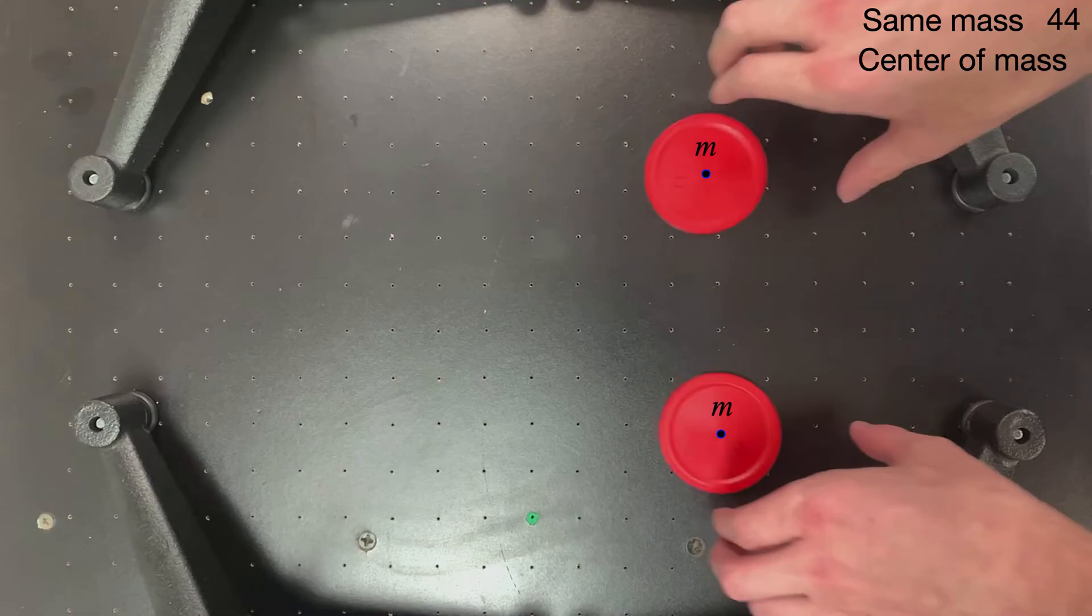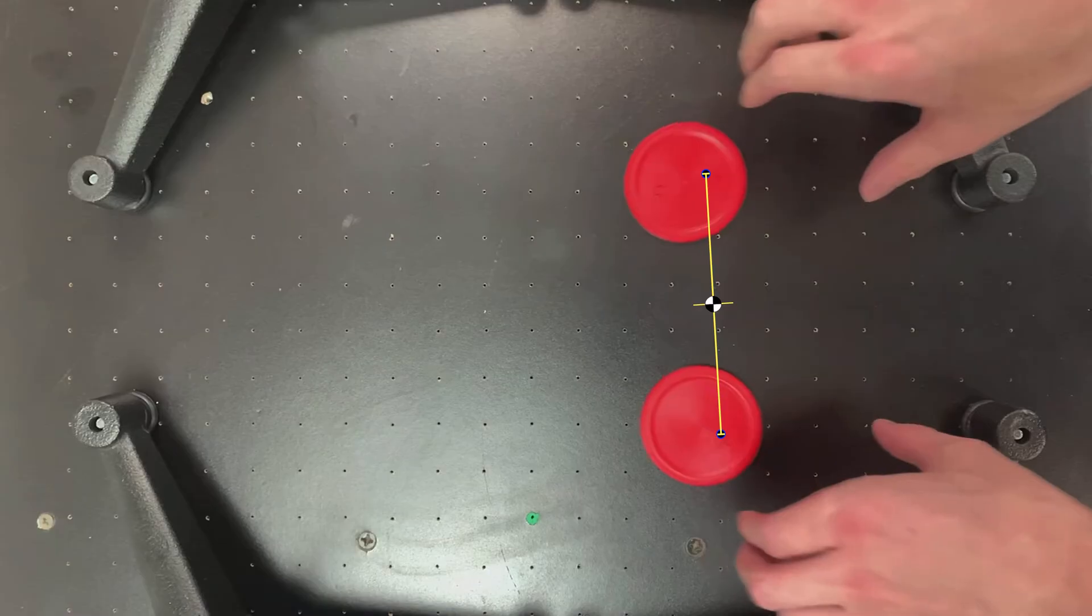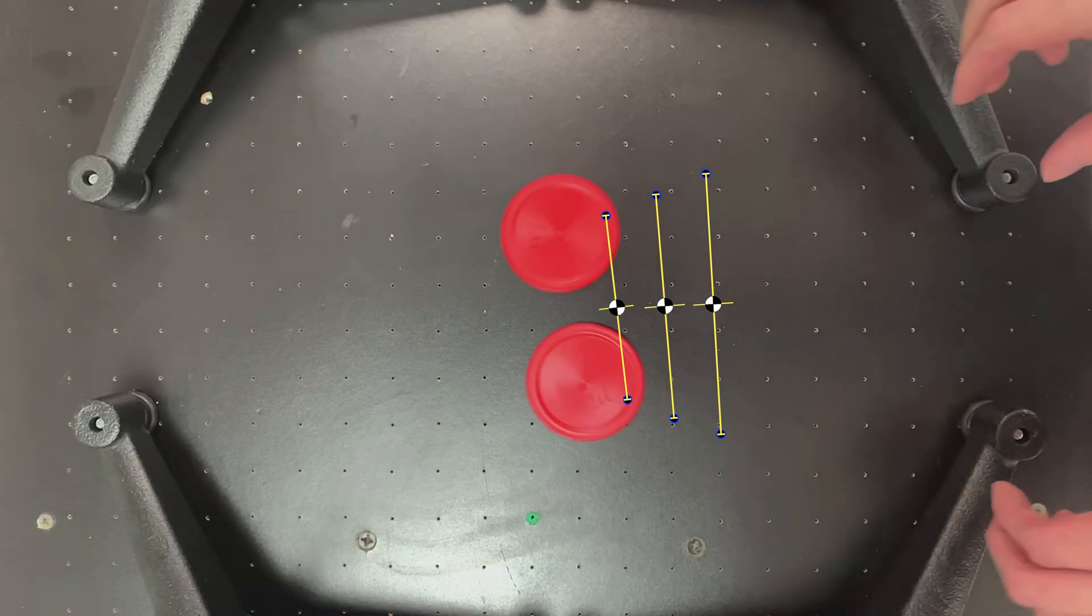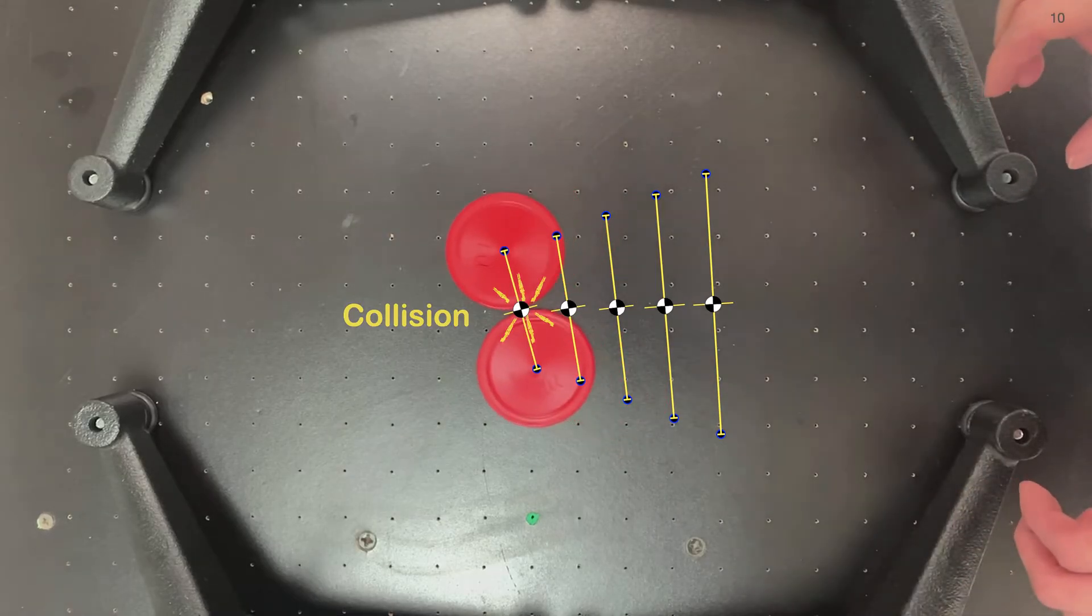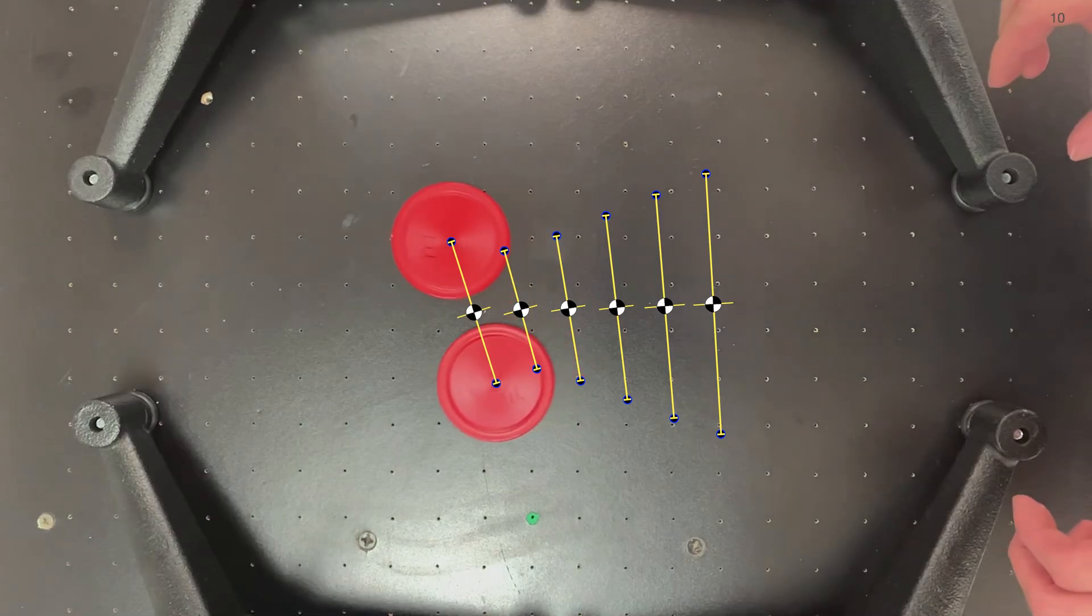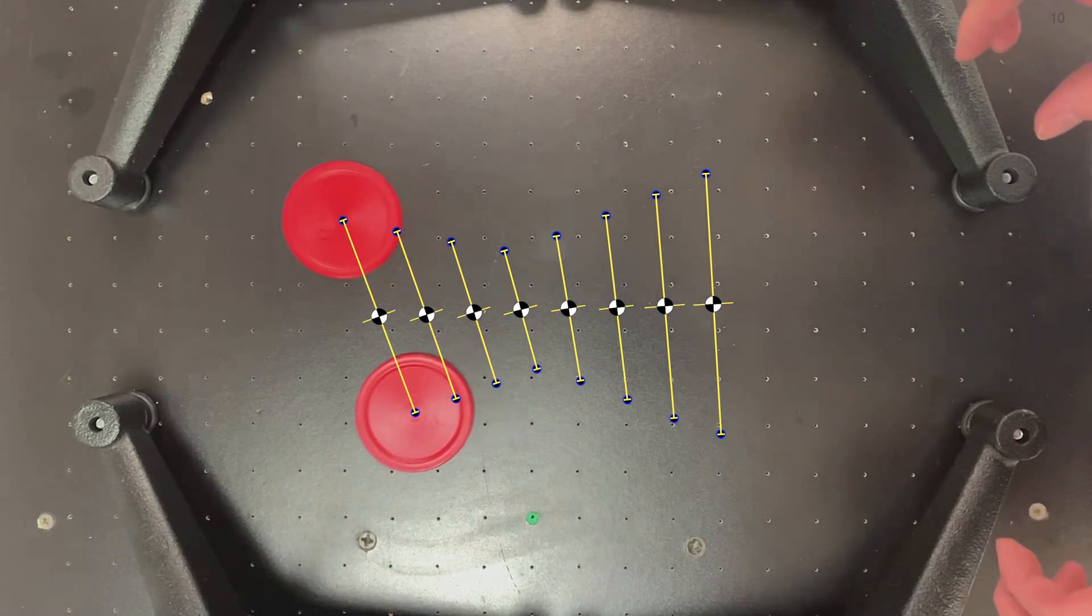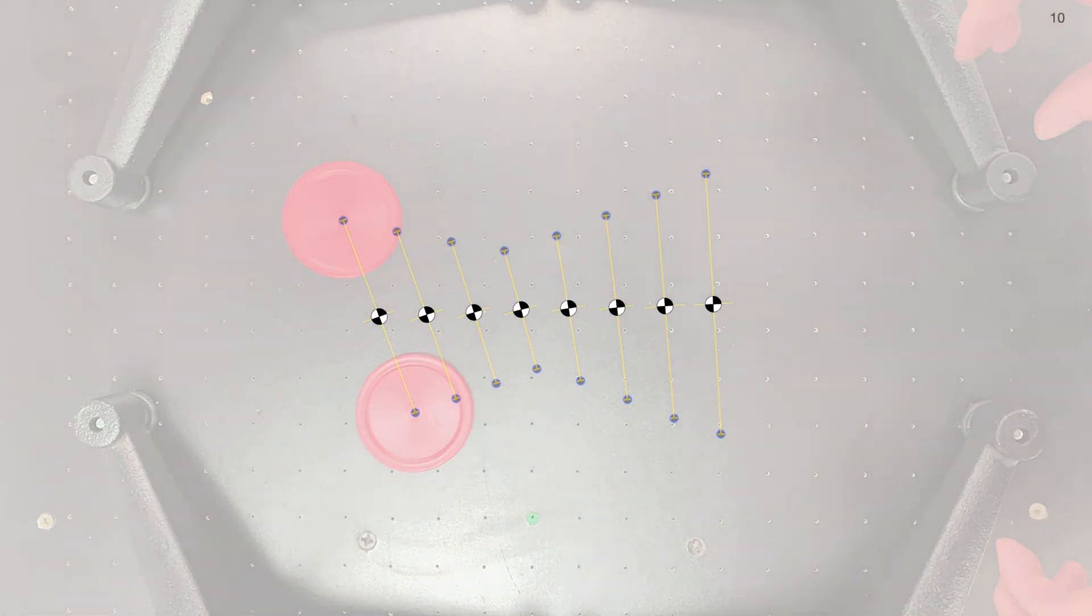How about the center of mass of this system? Watch the collision again. This time we'll mark the center of mass position, which is equidistant from each puck's center, at every 10 frames of video. I think you'll agree that the center of mass positions form a straight line, and that they are evenly spaced apart, indicating that the center of mass velocity is constant.